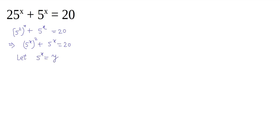Now let's assume 5 to the power x is equal to y. So the equation can be written as y squared plus y is equal to 20, or you can also write it as y squared plus y minus 20 is equal to 0.